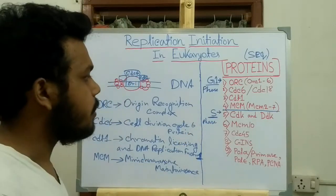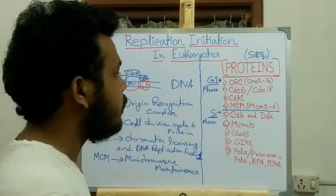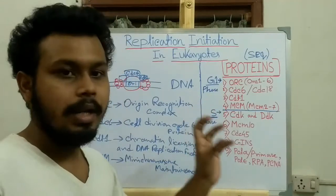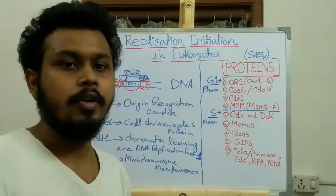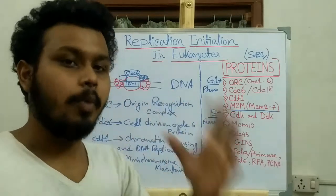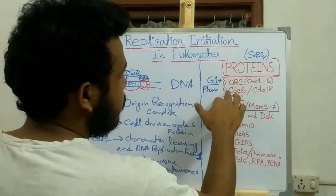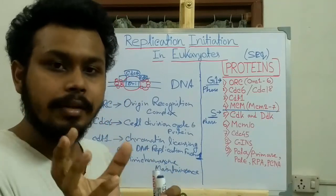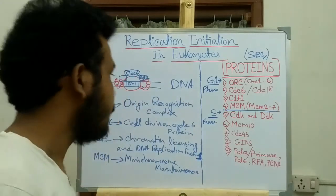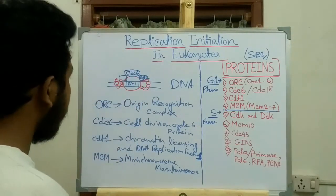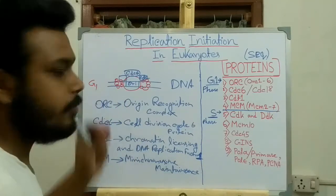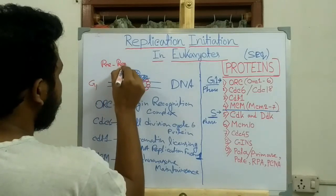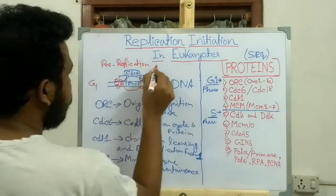The MCM protein is a hexameric protein that contains MCM2 to MCM7 proteins. This MCM protein has an ATP-driven helicase activity, which is the analog of DnaB helicase in prokaryotes. CDC6 along with CDT1 is the analog of DnaC in prokaryotes. This whole complex in the G1 phase is called the pre-replication complex.